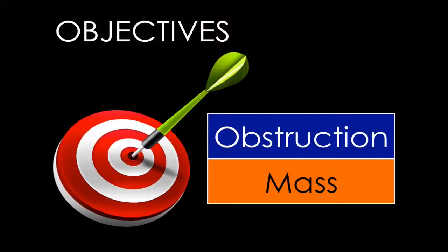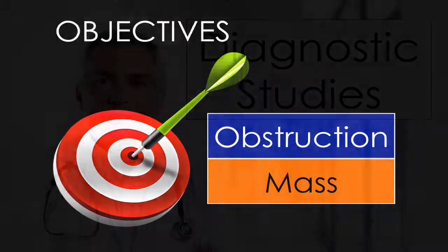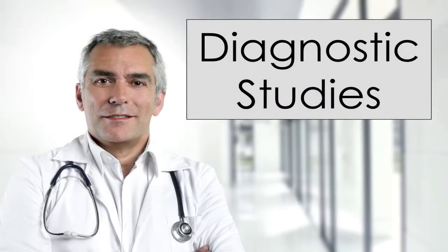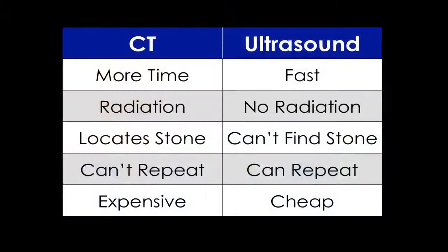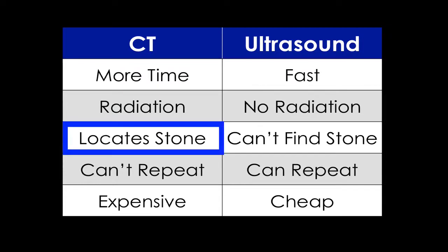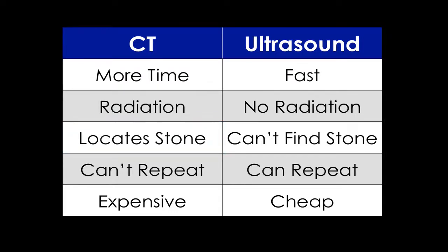The objectives for this module are the ultrasound techniques for evaluating obstruction of the renal system and renal masses. The renal system is most commonly imaged with CT and ultrasound. CT takes more time, uses radiation, is difficult to repeat, and is much more expensive. However, it can usually locate ureteral stones.